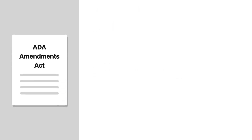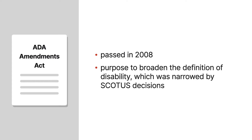In 2008, the ADA Amendments Act was passed by Congress. The purpose of the ADA Amendments Act was to broaden the definition of disability, which had been narrowed by a series of Supreme Court decisions that followed the passage of the ADA. You can find the Americans with Disabilities Act Amendments at Public Law 110-325.